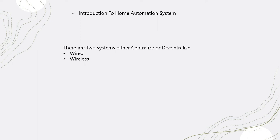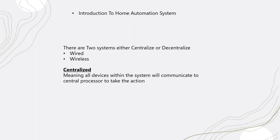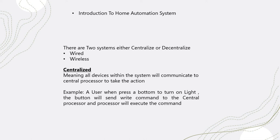For home automation systems, there are two types: wired or wireless. They can also be either centralized or decentralized. In a centralized system, you have a central processor, and each and every input device sends a command to that central processor, which then executes the command for the required actions — whether turning on a light, the AC, or any other application.